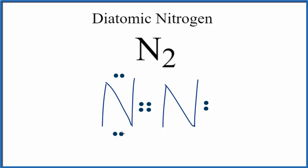Let's move another pair to the center to form a triple bond. So now this nitrogen has eight and this nitrogen has eight, and we're only using ten valence electrons. So this is the Lewis structure for diatomic nitrogen N2. Let's move these down here, and there you have it - the Lewis structure for diatomic nitrogen N2.